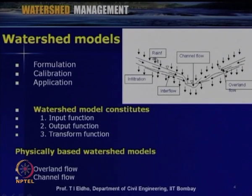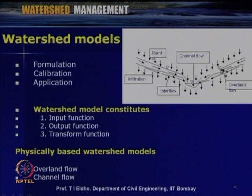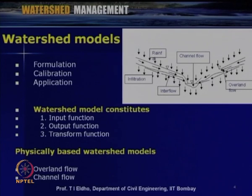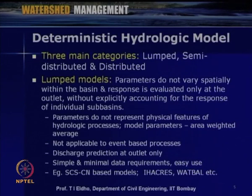In this approach, there is an input function — mainly rainfall — and an output function, which is runoff at the outlet or any location of the watershed. The transformation function includes the various hydrological processes taking place between rainfall and runoff. Surface runoff can be classified as overland flow and channel flow. After all the losses and transformations, runoff starts as overland flow, moves through small channels to the main channel, and then channel flow occurs.